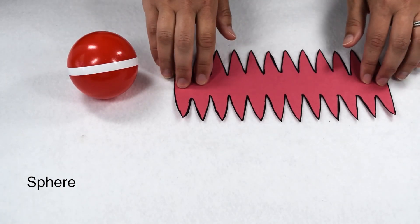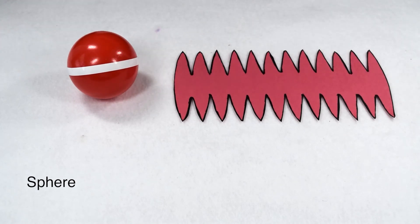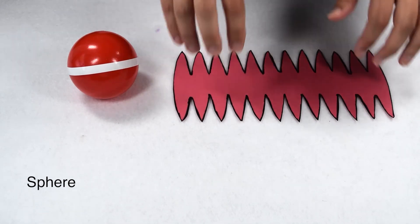For the net of a sphere, it's difficult to flatten one and keep all lengths, angles, and areas the same. Where we most often see an attempt at the net of a sphere is when we're trying to look at the map of the Earth instead of at a globe.